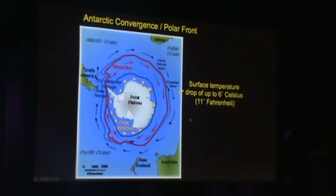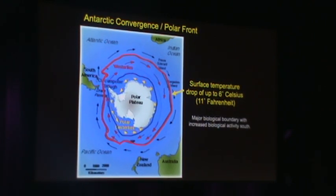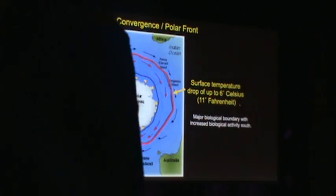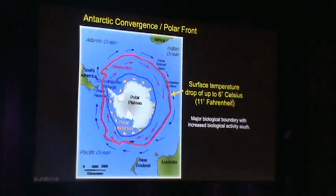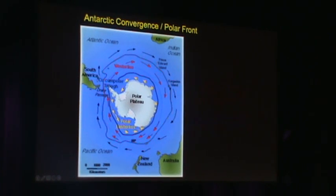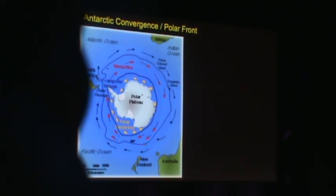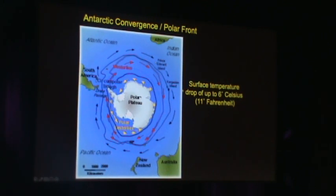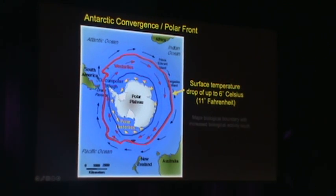The Antarctic convergence, or polar front, with roughly a 6 degrees Celsius or 11 degrees Fahrenheit temperature drop, is outlined by this circle on the map. All of the circulation of the ocean at this point is clockwise around the continent. This is the major biological boundary, and then we go on to the Antarctic divergence.